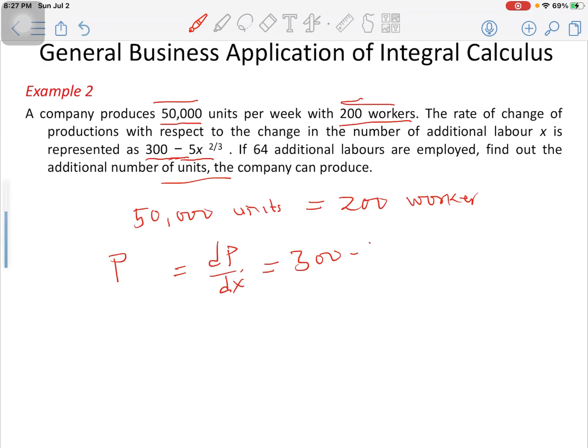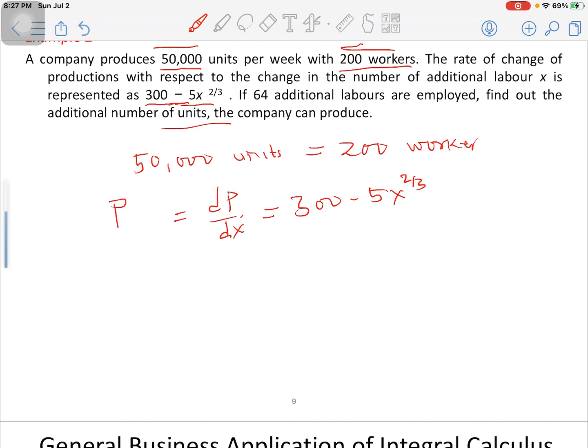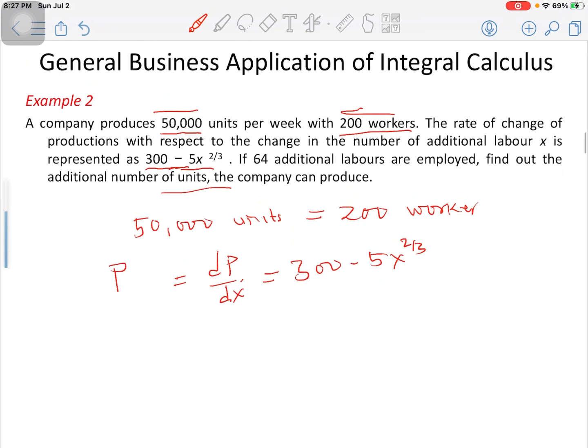Now as I said earlier, this is in the form of rate of change. Integration tells us how things are being changed at a particular point. So this function will help us determine if any additional labor is being added to the 200, how is the production going to change. This is basically a gradient function.